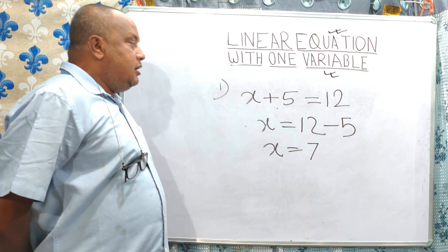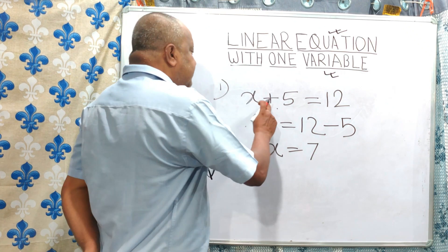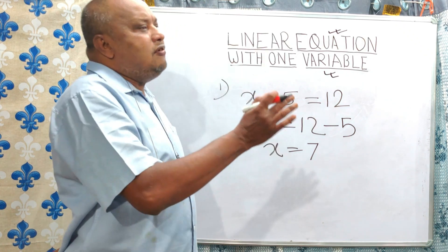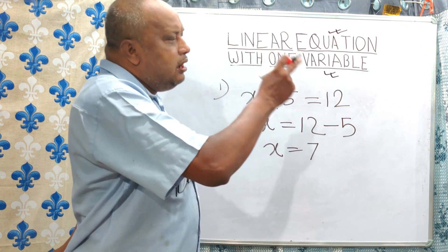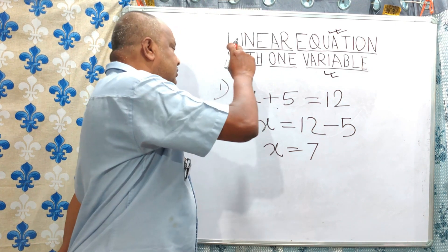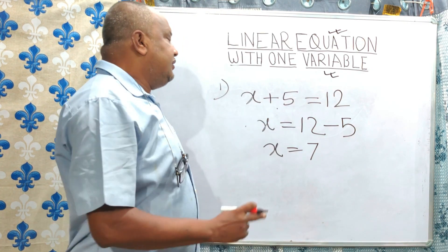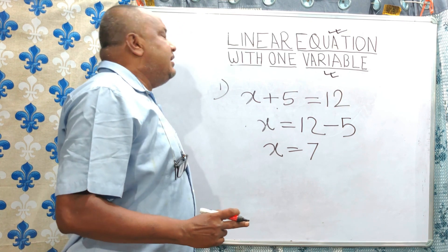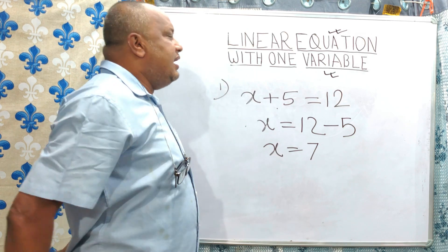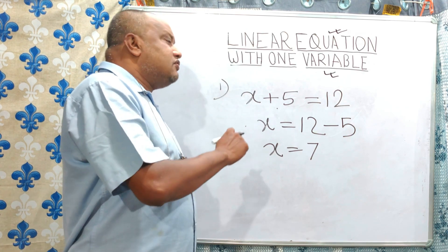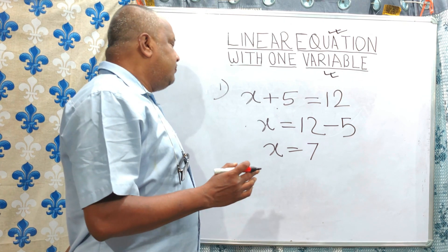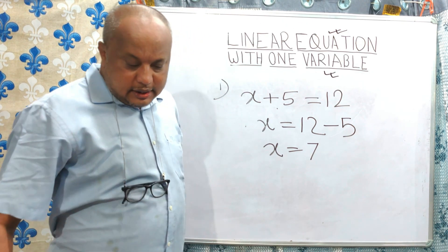This is the first tip: when a plus number is shifted from one side to another — whether left to right or right to left — that plus sign is converted to a minus sign. Similarly, a minus sign shifted from one side to another is converted from minus to plus.